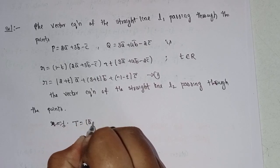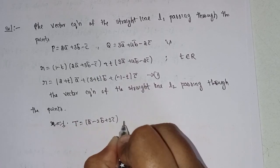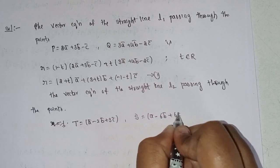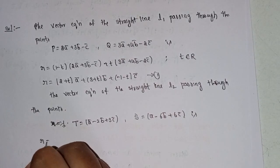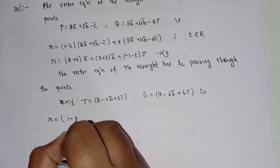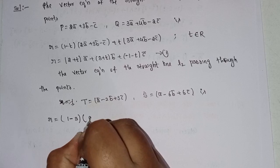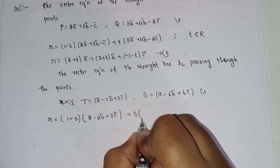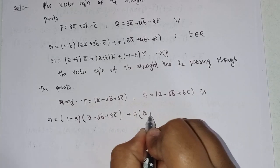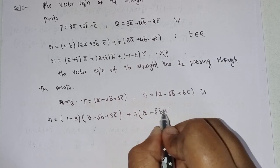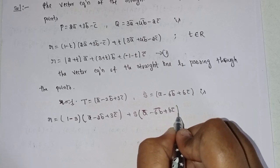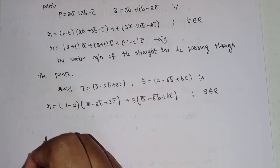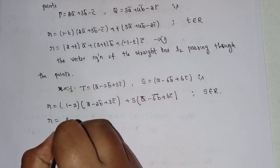a minus 2b plus 3c and a minus 6b plus 6c is r equal to (1 minus s) into (a minus 2b plus 3c) plus s into a minus 6b plus 6c.